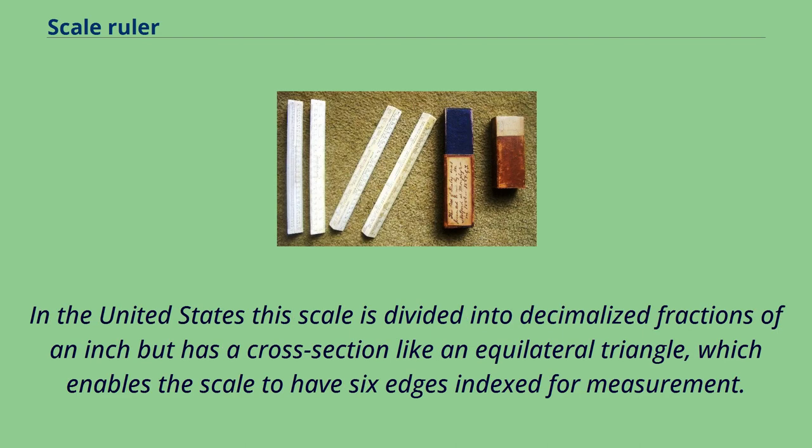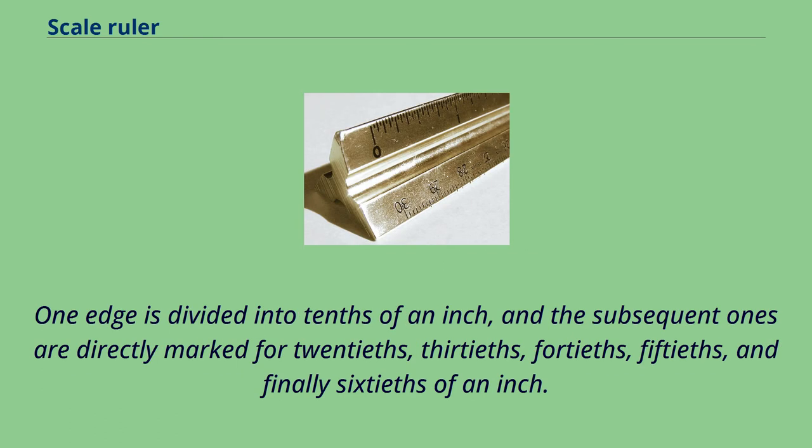In the United States this scale is divided into decimalized fractions of an inch but has a cross-section like an equilateral triangle, which enables the scale to have six edges indexed for measurement. One edge is divided into tenths of an inch, and the subsequent ones are directly marked for twentieths, thirtieths, fortieths, fiftieths, and finally sixtieths of an inch.